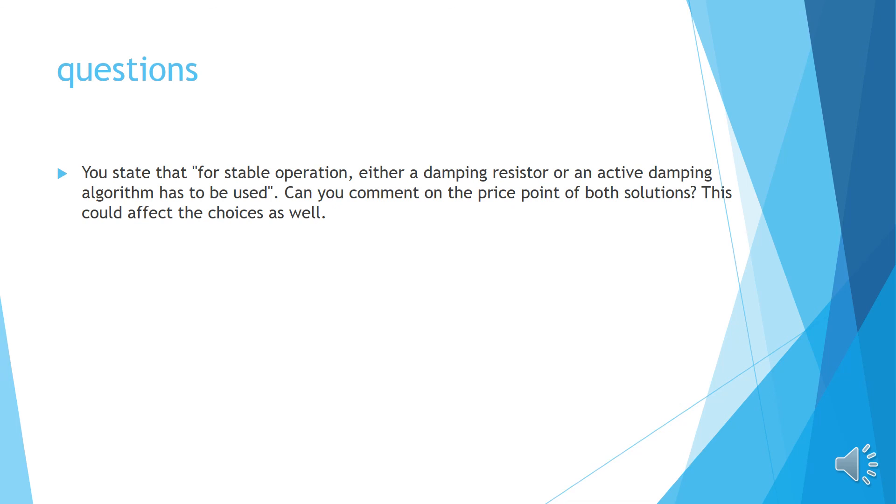In order to answer to this question I should respond that in a passive damping method a physical resistor is added to the LCL filter. It has some disadvantages such as larger filter volume causing power losses and need for a cooling system. Also active damping method needs a current sensor for detection of capacitor current of LCL filter. Regarding these cases, the implementation costs of the passive damping method are more than active damping method.